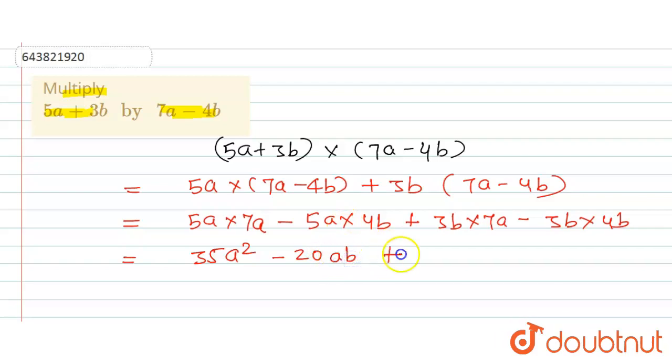Plus 3 into 7, 21, and a into b, that is b into a, can be written as ab. And here minus 3 into 4, so this is minus 12, and b into b, power will be added, so b square.